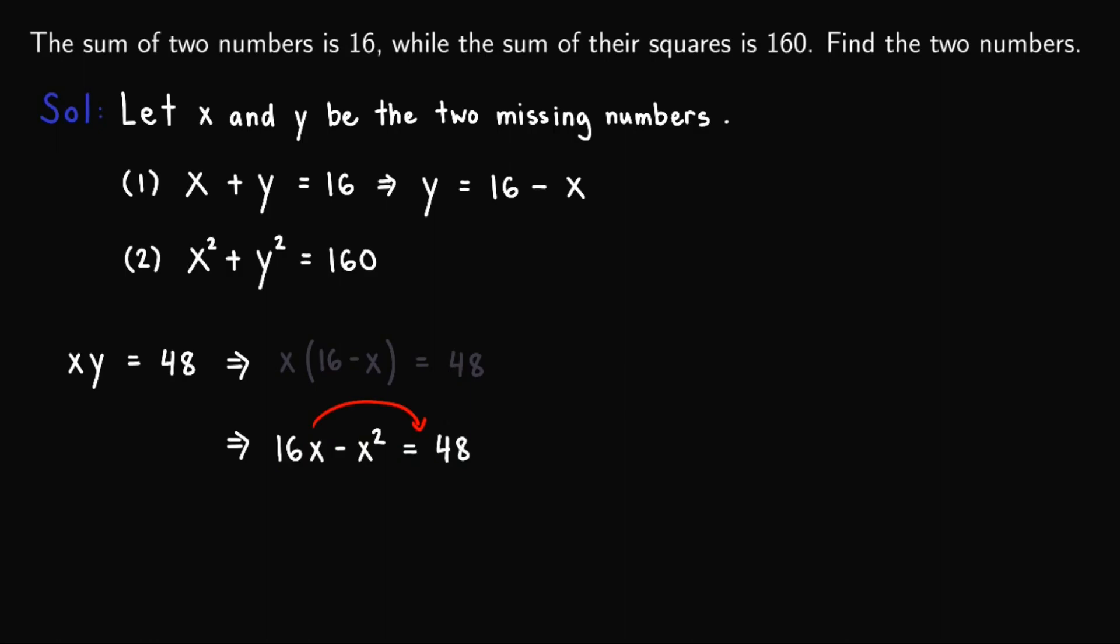We move 16x to the right and negative x squared to the right as well. And we'll have 0 equals x squared minus 16x plus 48. Or interchanging their positions, this is x squared minus 16x plus 48 equals 0.